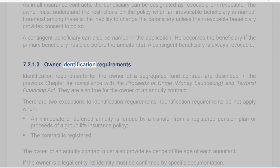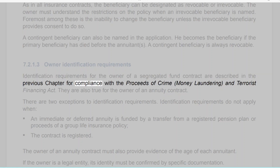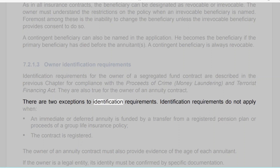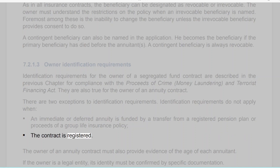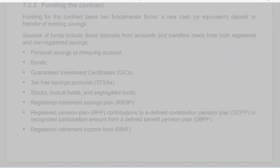Section 7.2.1.3: Owner identification requirements. Identification requirements for the owner of an annuity contract are similar to those for a segregated fund contract, for compliance with the Proceeds of Crime (Money Laundering) and Terrorist Financing Act. Two exceptions apply: identification requirements do not apply when an immediate or deferred annuity is funded by a transfer from a registered pension plan or proceeds of a group life insurance policy, or when the contract is registered. The owner must also provide evidence of the age of each annuitant; if the owner is a legal entity, its identity must be confirmed by specific documentation.